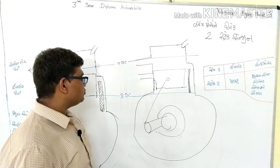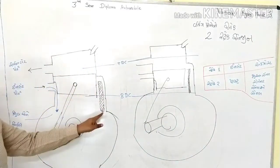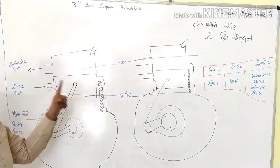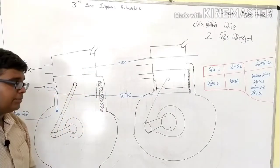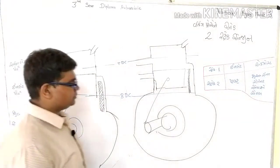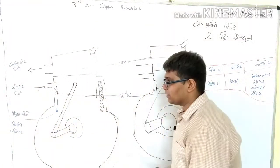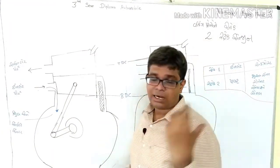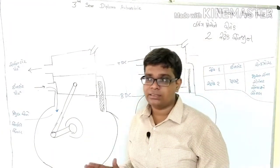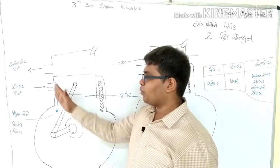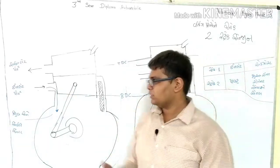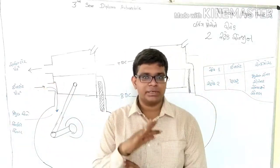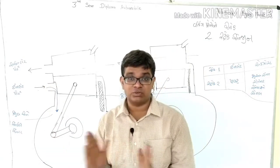We will look at the transfer case and the overflow channel. The first thing to note is that this is a port-based engine, not a valve-based engine. The port means the valve is absent — there is no valve mechanism. This is the 2-stroke engine.